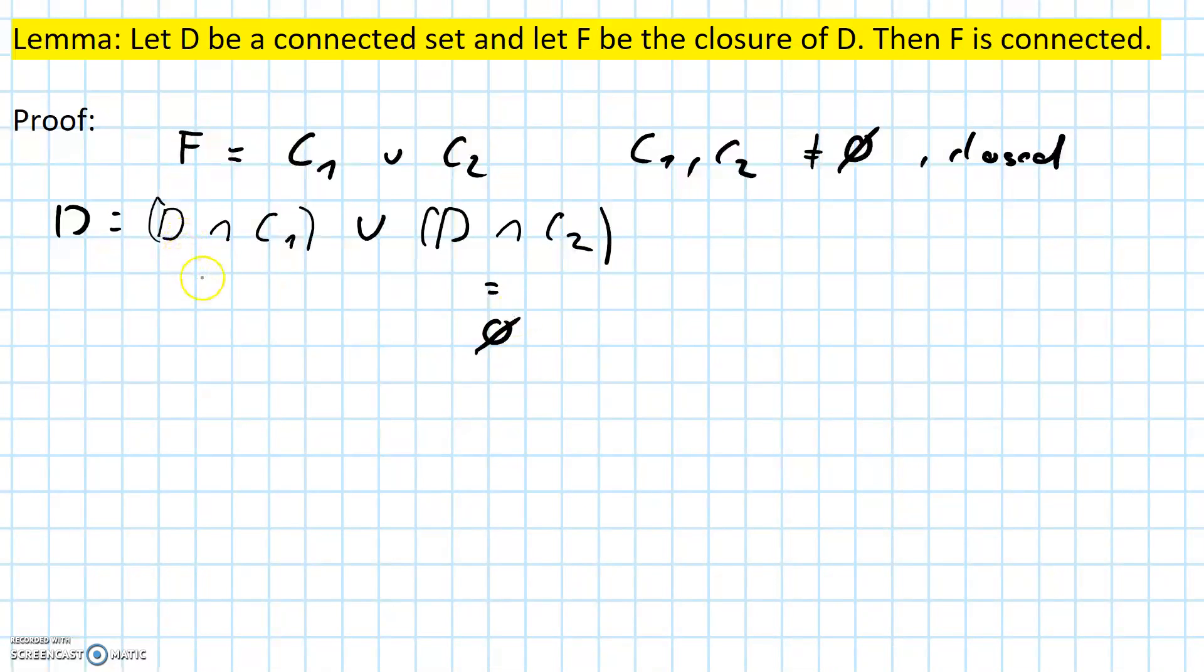This means that all of the points of D have to lie in the intersection of D with C1, which is the same as saying that D is contained in C1. So this is our first conclusion.